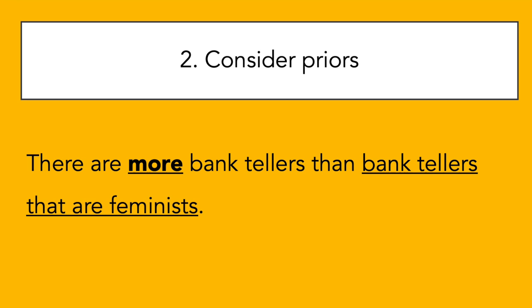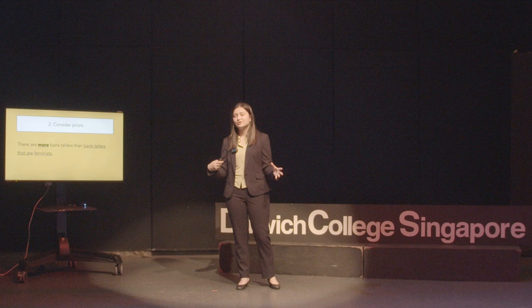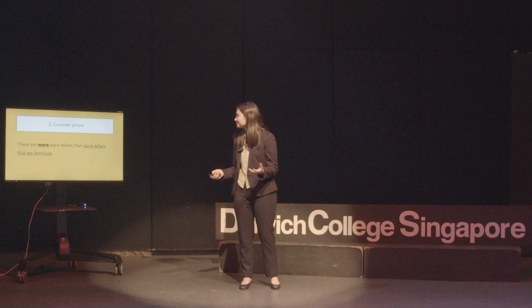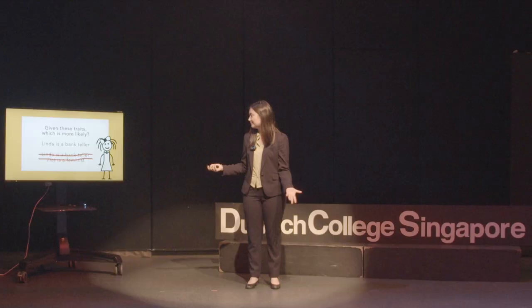Another thing you can do is consider what we call priors. Priors in maths, Bayes theorem, and probability in general are things that we know before we get any additional evidence in the problem. For example, I already knew there are more bank tellers than bank tellers who are feminists — I didn't need to get any new information about Linda. Once we know these two things and apply them to the problem, we get the correct answer: it's more likely that Linda is a bank teller.